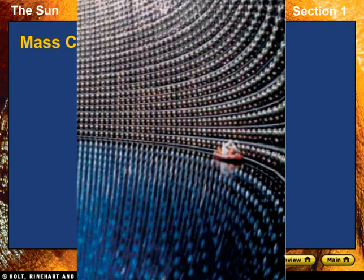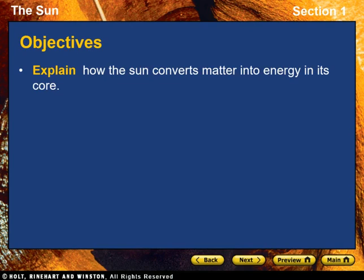Elements other than hydrogen can fuse too. In stars that are hotter than the sun, energy is produced by fusion reactions of the nuclei of carbon, nitrogen, and oxygen. At this point, you should be able to explain how the sun converts matter into energy in its core.